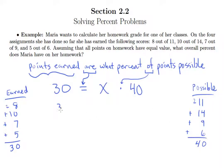So what this cleans up to is 30 is what percent of 40, or 30 equals 40x. And so of course from here we can divide both sides by 40 to get x by itself.